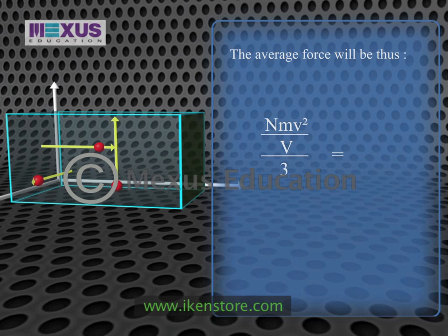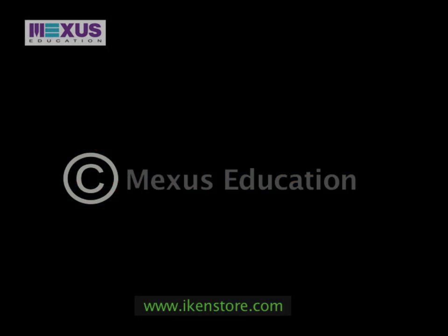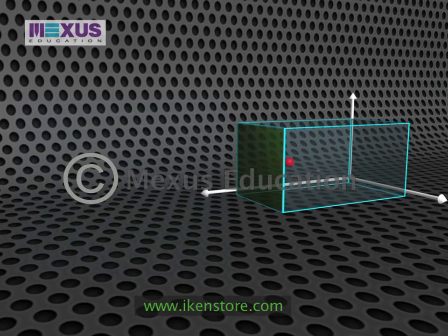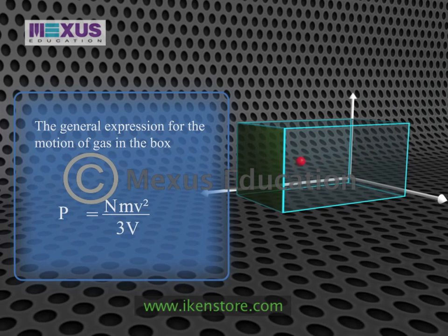Considering the general assumption that the molecules have a similar effect in every direction, we are assuming there are a large number of molecules and that their motion is entirely random. This proof relies upon the molecules travelling at uniform speed and in straight lines even when there are large numbers. We are assuming there are no forces at all between the molecules. We have now arrived at a general expression for the motion of gas in the box: the pressure in the box is equal to the number of particles times the mass times the square of the velocity, divided by three times the volume of the box.